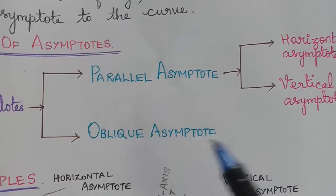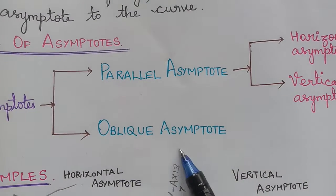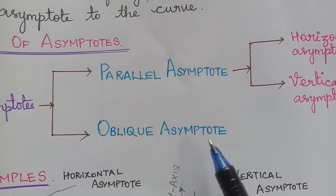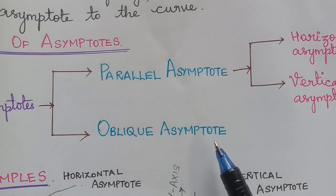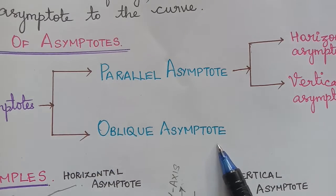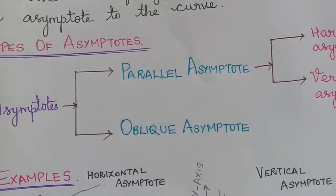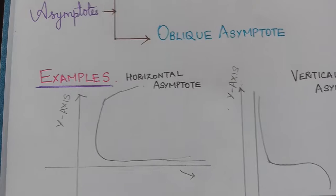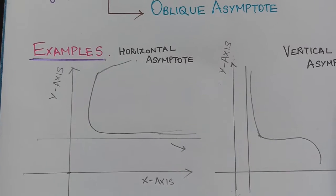An oblique asymptote is an asymptote which is neither parallel to the x-axis nor parallel to the y-axis. We shall learn this with the help of some examples.